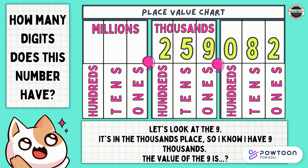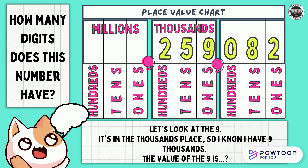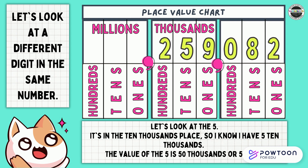How many digits does this number have? That's right — 6 digits. Let's look at the 9 — it's in the thousands place, so I know I have 9 thousands. The value of the 9 is? Think, then respond. That's right — 9 thousands. I can say 9 thousands or 9 thousand. Let's look at the 5 — it's in the ten thousands place, so I know I have 5 tens thousands. The value of the 5 is 50 thousands or 5 tens thousands.